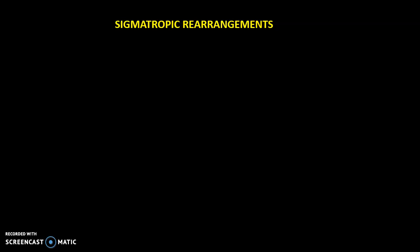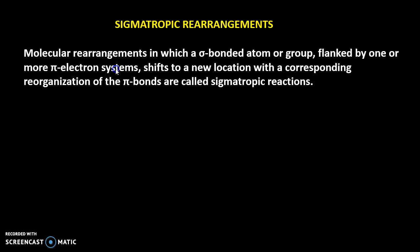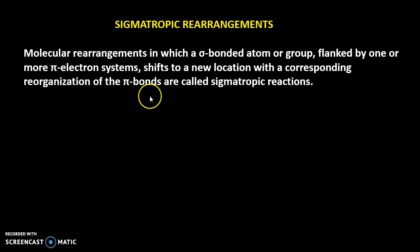Welcome students in the organic chemistry lecture series. Today in this video lecture we are going to study about a new class of pericyclic reactions called sigmatropic rearrangement. These are molecular rearrangements in which a sigma-bonded atom, group, or pi electron system shifts to a new position, giving a reorganized structure in the product. That type of reactions are called sigmatropic reactions.